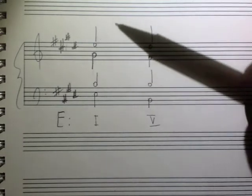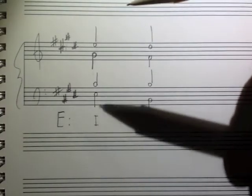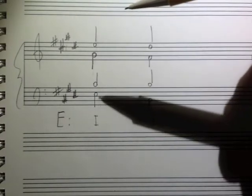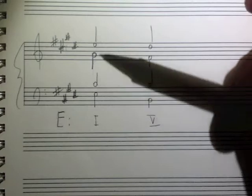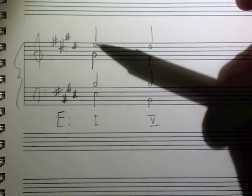So on the staff paper right now we have in choral style E major setup. We have an E major chord - here's your tonic tone, here's the 5th, here's the 3rd of the chord, and here's the tonic tone reiterated.